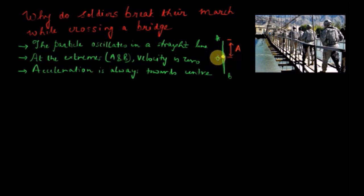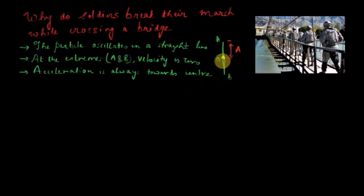A is called the amplitude of oscillation. This is a type of oscillation in which the particle moves in a straight line, and this motion is called simple harmonic motion. Simple harmonic motion is a special type of oscillation in which the particle moves in a straight line. One more important thing to observe is that the particle repeats its motion after a particular time interval.